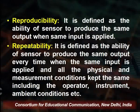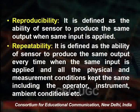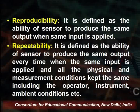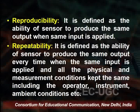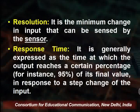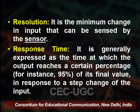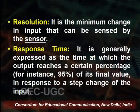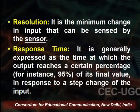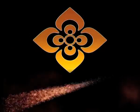Next is reproducibility — the ability of the sensor to produce the same output when the same input is applied. Next is repeatability — the ability to produce the same output every time the same input is applied, with all physical measurement conditions kept the same. Resolution is the minimum change in input that can be sensed. Response time is generally expressed as the time at which the output reaches a certain percentage of its final value in response to a step change of the input. These are the attributes of the sensing system. Thank you very much.